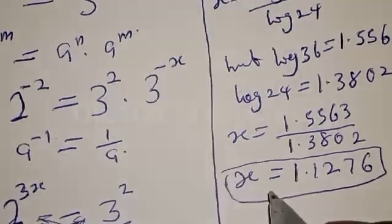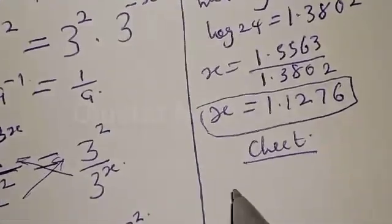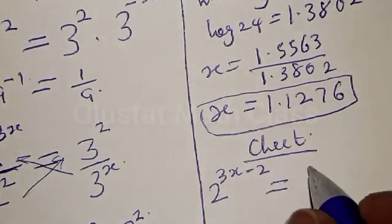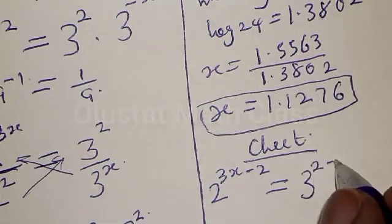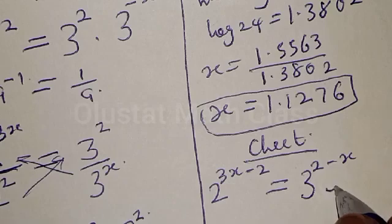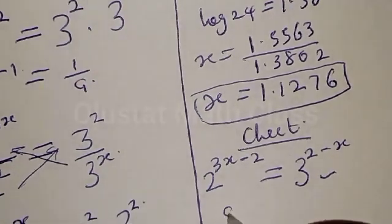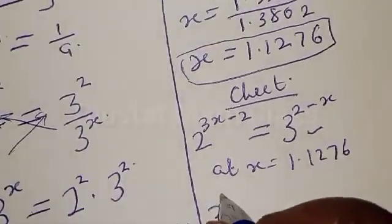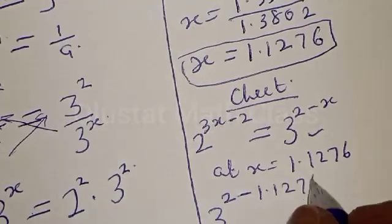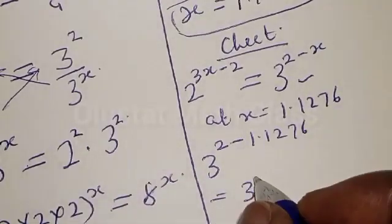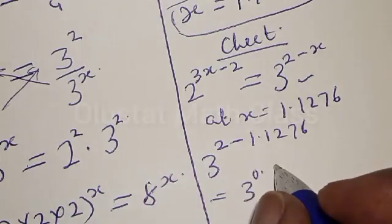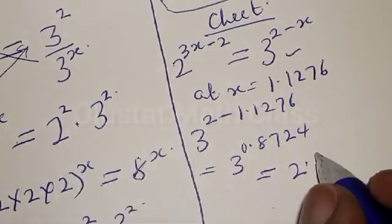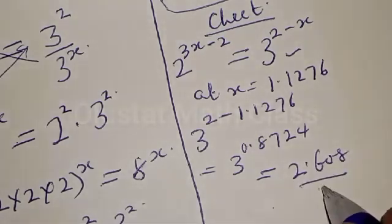Then we can check in order to confirm our answer. We have the given equation: 2 raised to the power 3x minus 2 must be equal to 3 raised to the power 2 minus x. Let's consider the right hand side first. At s equal to 1.1276, we have 3 raised to the power 2 minus 1.1276, which equals 3 raised to the power 0.8724, which is equal to 2.608. That is our right hand side.